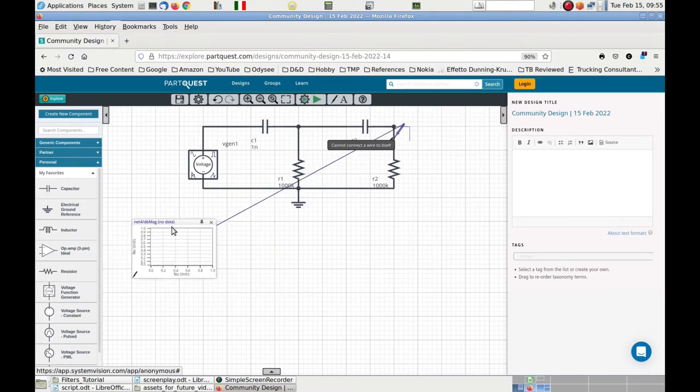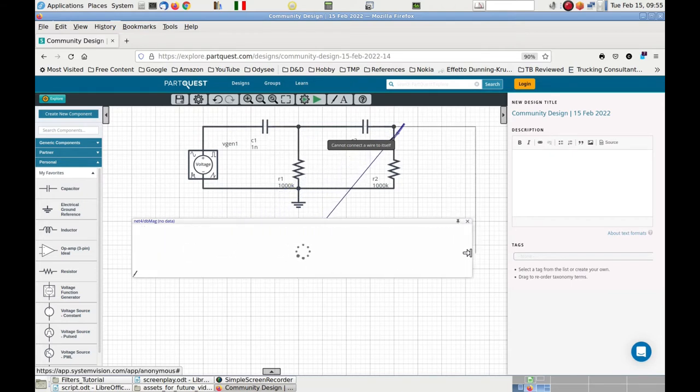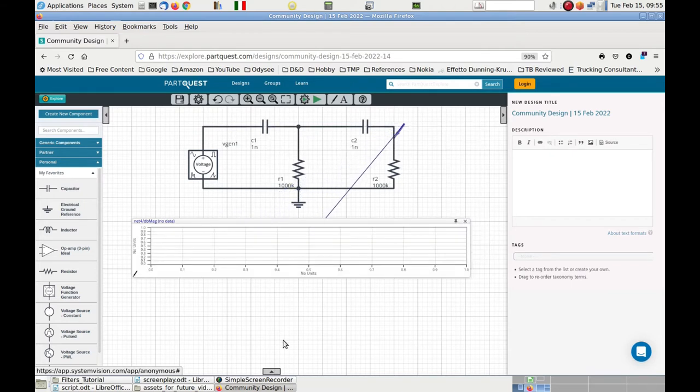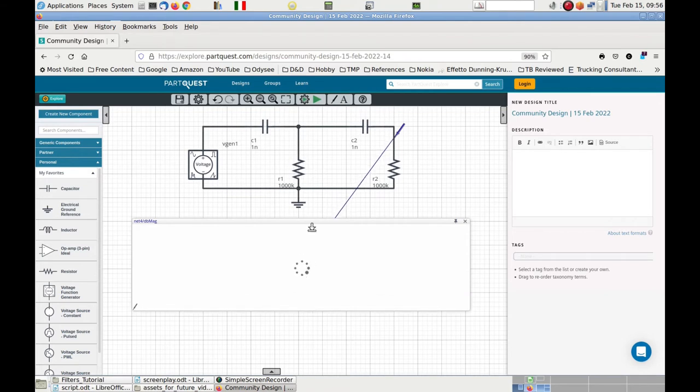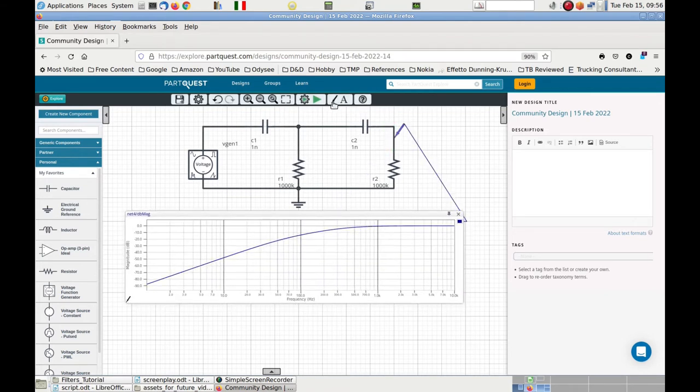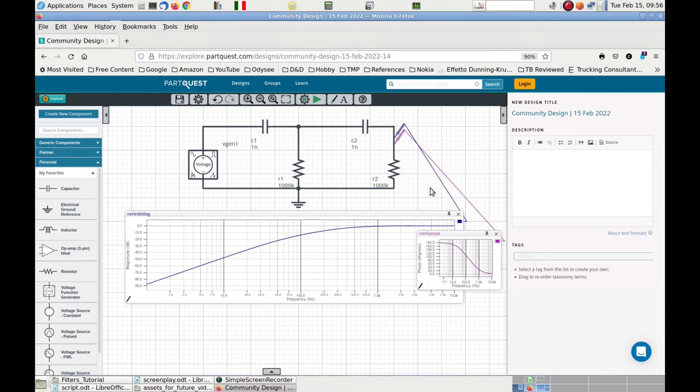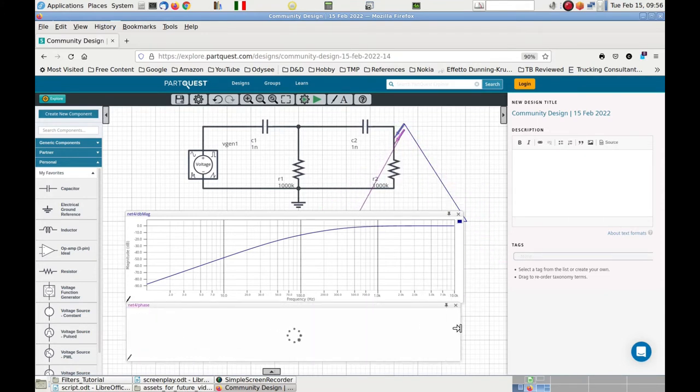Now that the circuit is ready, we need to attach the probe to the point where we want to take the measurement. We adjust the size of the window that will trace the magnitude in dB and then rerun the simulation. Once the simulation is done, we can see the expected magnitude diagram. And now we can also add another probe to trace the phase of the signal. We now have both Bode diagrams.